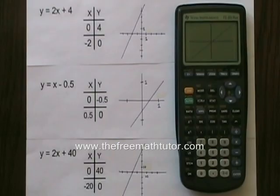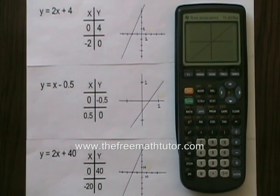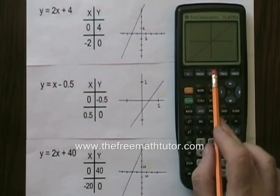But as I pointed out when we first looked at this equation, this line passes very close to the origin. And it's hard for me to see my x and y intercepts distinctly. So I'm going to use the zoom feature in order to see them better. Here is the zoom button. I press it.